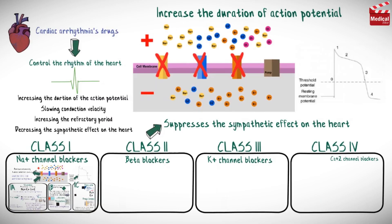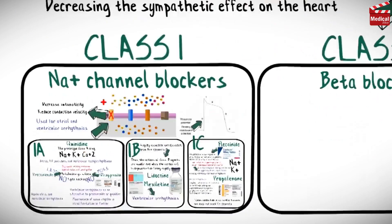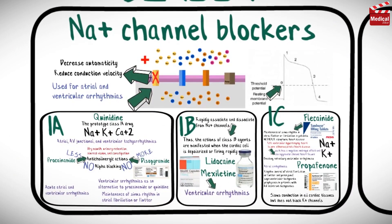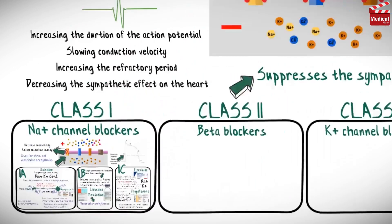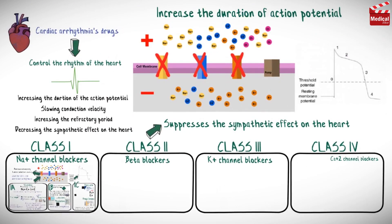In the previous lecture we started talking about cardiac arrhythmia treatments. We said that they are divided into four major classes according to their mechanism of action, and we already discussed class 1. So today we'll discuss the other three classes.